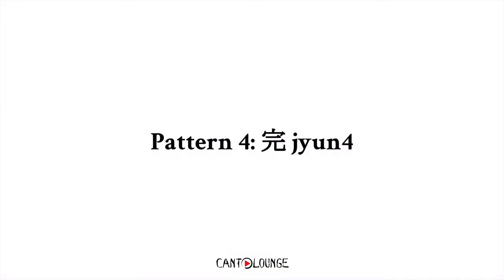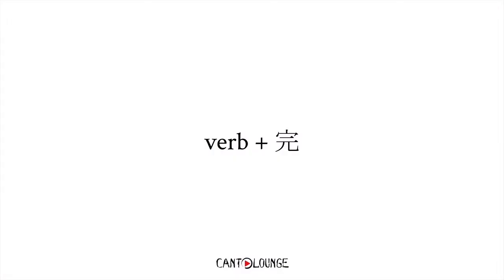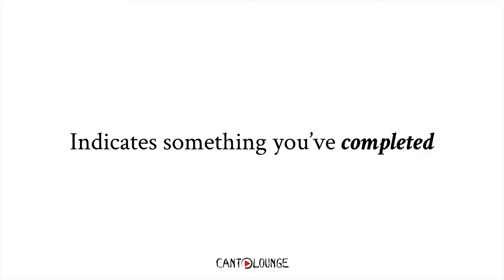The third aspect marker I want to talk about is 完. 完 on its own means finish or it's complete. For this aspect marker as well, we just add it after the verb. And 完, as you can probably guess, indicates something that you've completed.